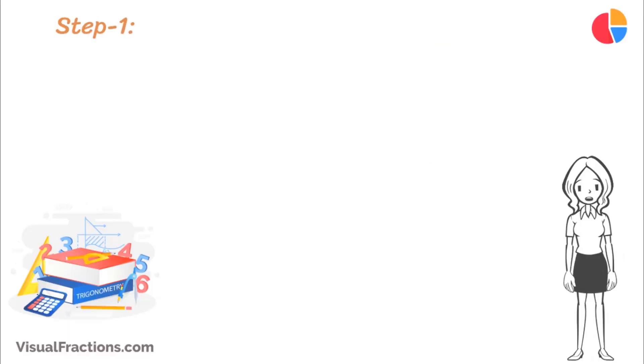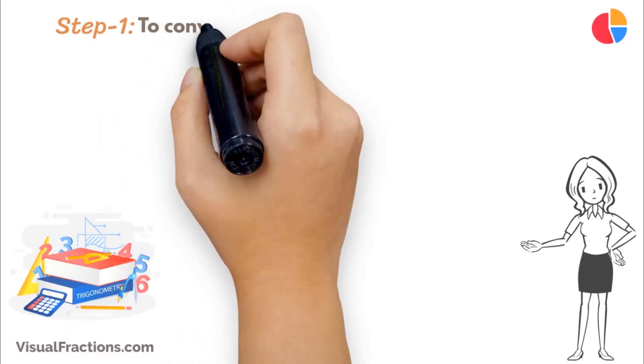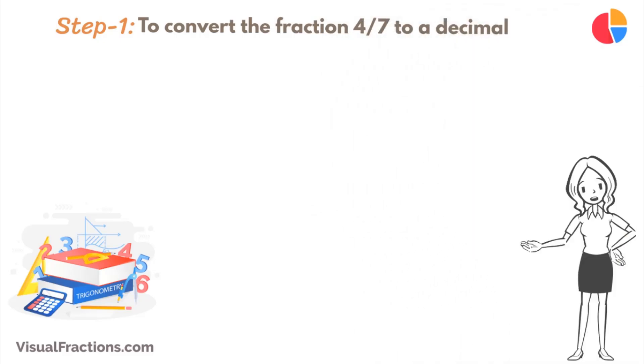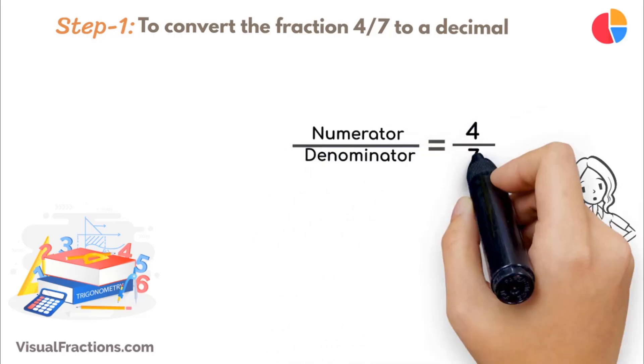The first step in converting the fraction 4 sevenths to a percent is to convert this fraction to a decimal. We do this by dividing the numerator, the top number, which is 4, by the denominator, the bottom number, which is 7.